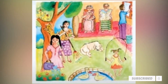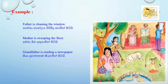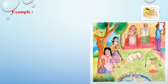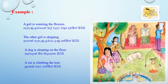Father is cleaning the window. (Thaata janeelaya pittisithu karamini.) Mother is sweeping the floor. (Amma bimathu gaamini.) Grandfather is reading a newspaper. (Seya puatpatak keevaamini.) Grandmother is drinking tea. A girl is watering the flowers. The other girl is skipping. A dog is sleeping on the floor. A cat is climbing the tree.